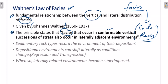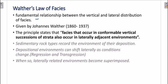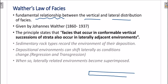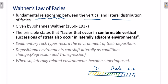The law describes the fundamental relationship between the vertical and lateral distribution of facies. Lateral distribution means side-by-side arrangement — for example, sandstone, then shale, then limestone deposited side by side. Vertical distribution means these same rock types stacked on top of each other — limestone, then shale, then sandstone going upward. Walther's Law says there is a relationship between these two types of distribution.